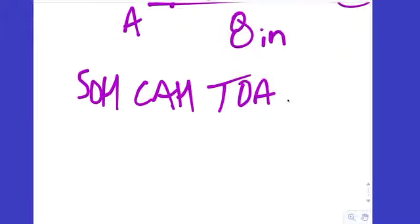We mentioned SOHCAHTOA yesterday — that's a way to remember how to set up your sine, cosine, and tangent ratios in terms of opposite, adjacent, and hypotenuse. So we have this triangle given.